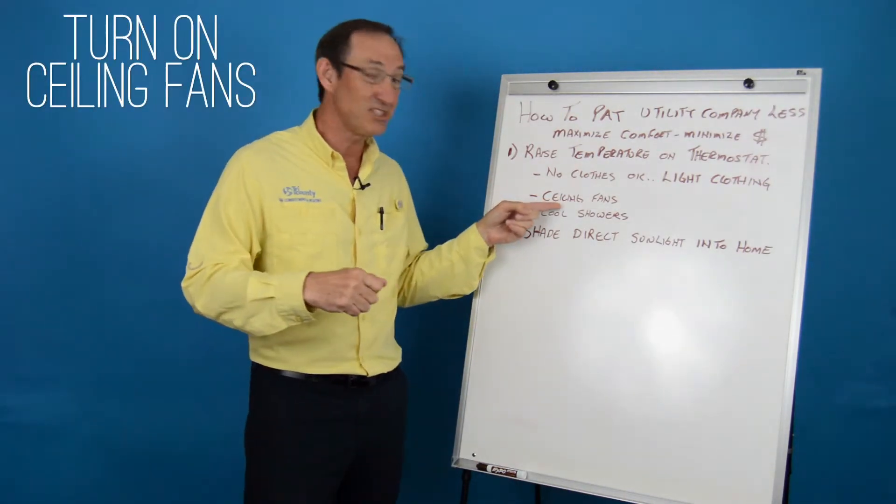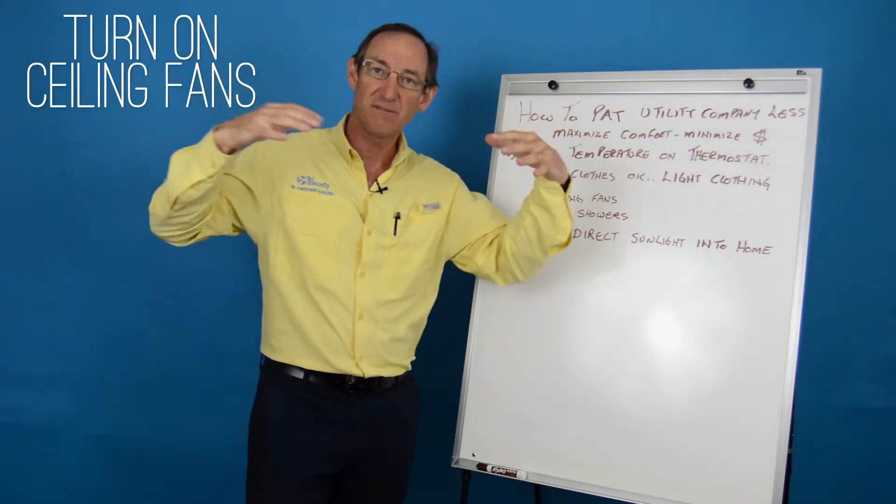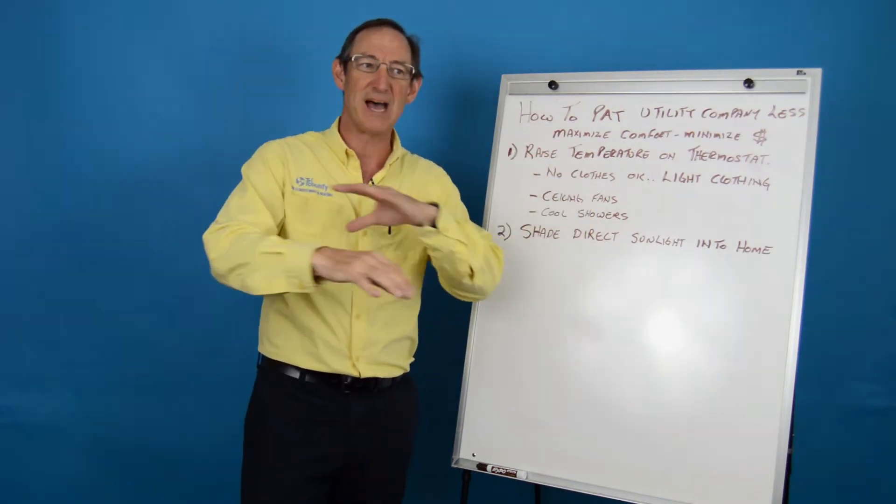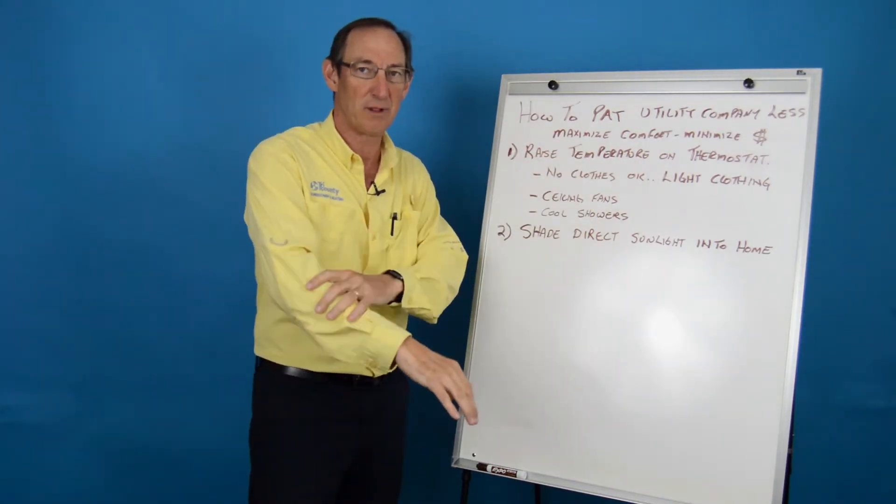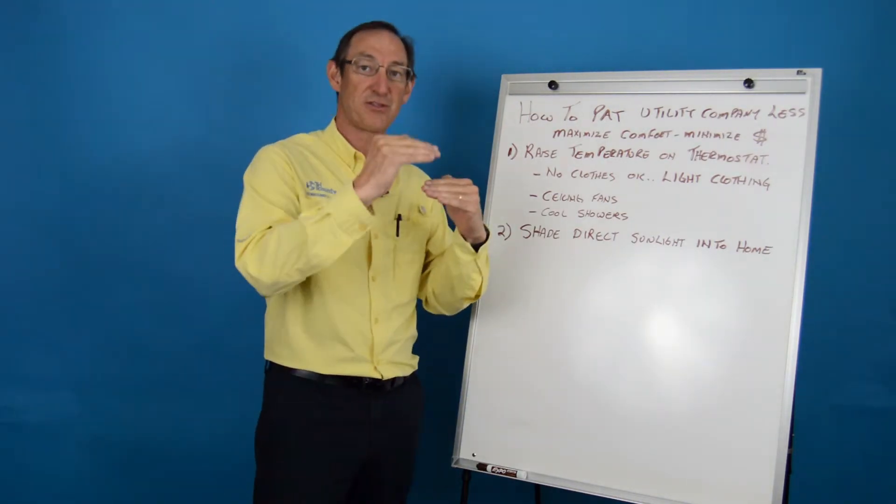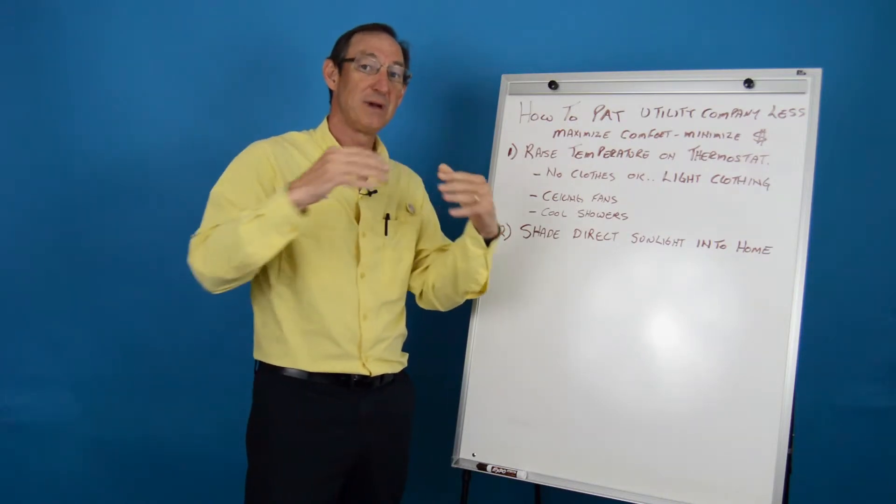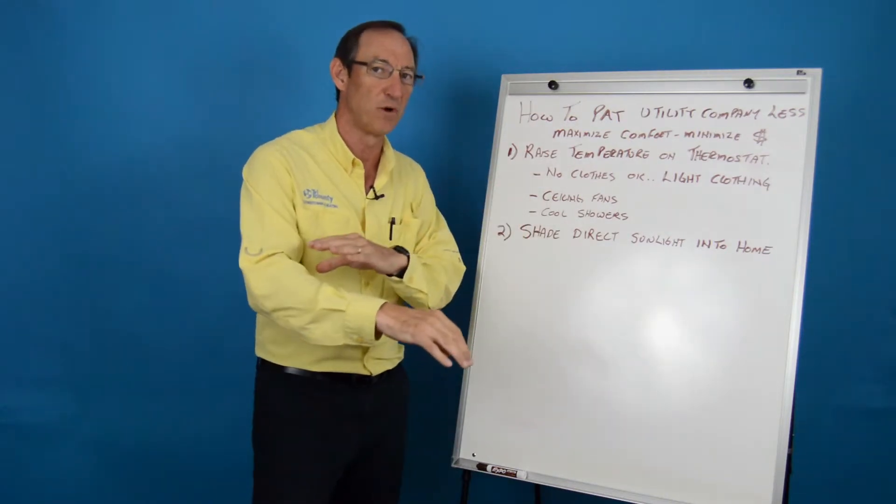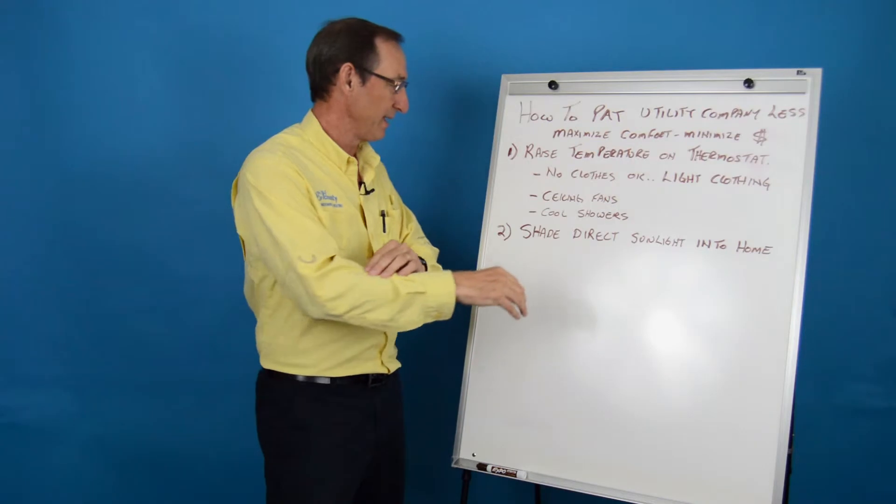Second thing you can do is put the ceiling fan on. The ceiling fan, when you're living in a space, if you have just a little bit of air movement, you'll have evaporation from your skin and you will feel cooler. So you can raise the thermostat up a degree or two, have a little bit of air movement, you will feel cooler.